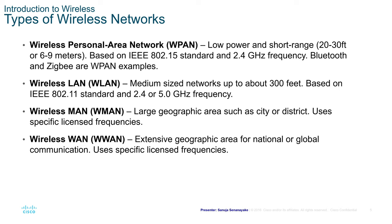Wireless LAN, also known as WLAN, is a medium-sized network up to 300 feet, based on the IEEE 802.11 standard, and uses 2.4 and 5 GHz frequency. This is the one we are most familiar with because WLAN technology is what we see in our homes, small businesses and offices where we connect to our Wi-Fi networks.